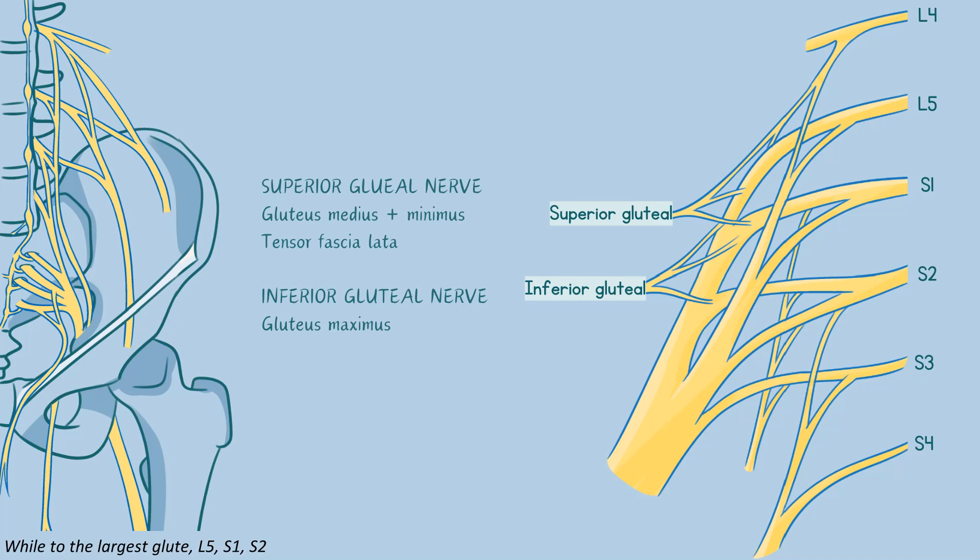To the largest glute, L5 S1 is tuned — the inferior gluteal nerve is there to help extend the thigh.